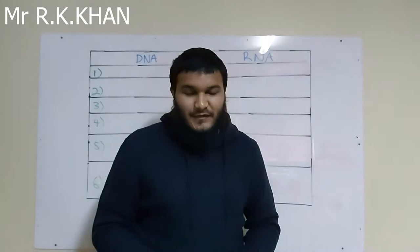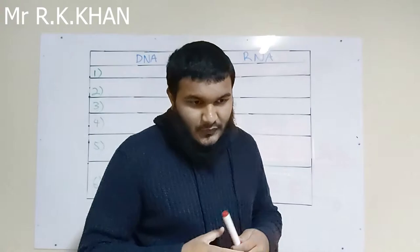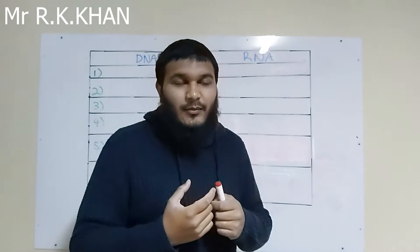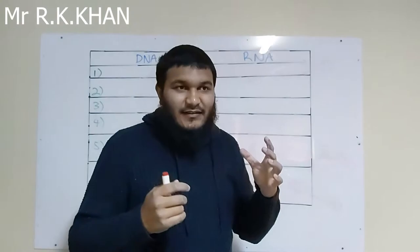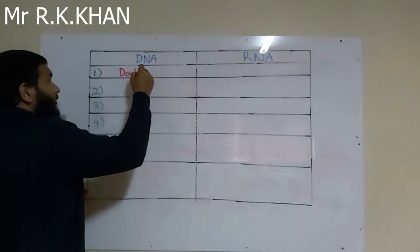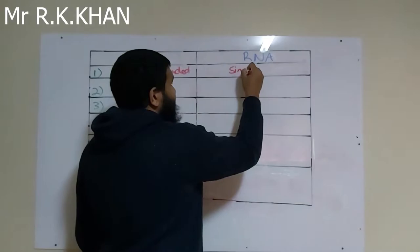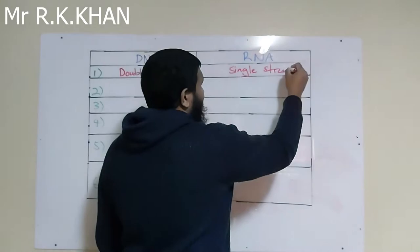Now we're going to look at the differences between DNA and RNA. The first difference: from previous lessons, we discussed that DNA is double stranded — it has a double helix structure. Whereas RNA is single stranded, meaning it does not have a double helix structure.